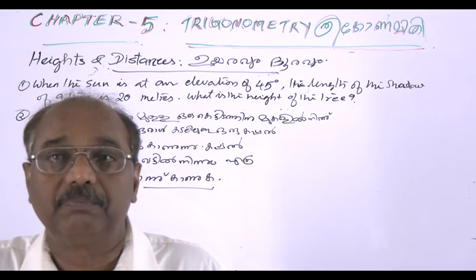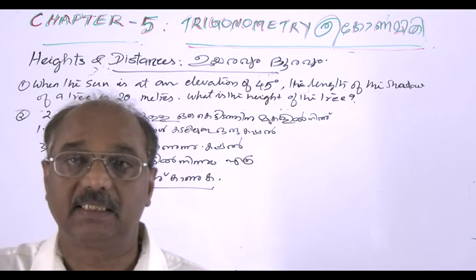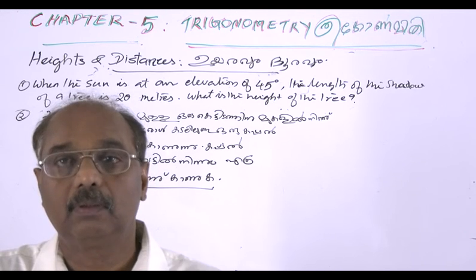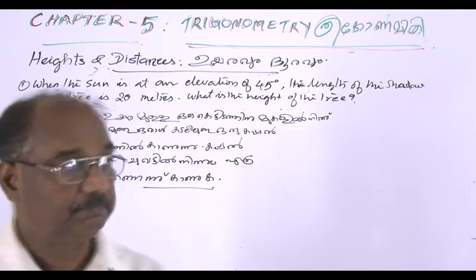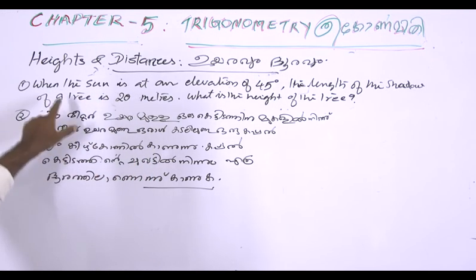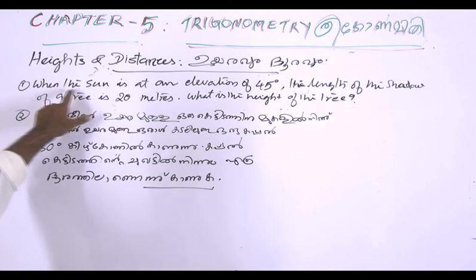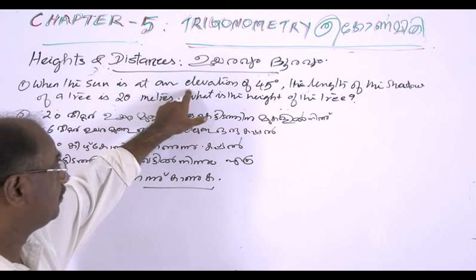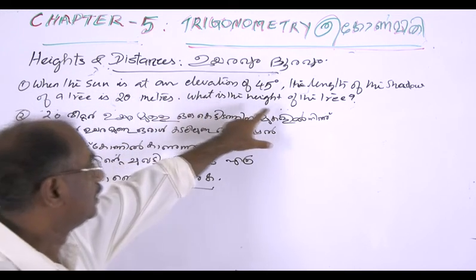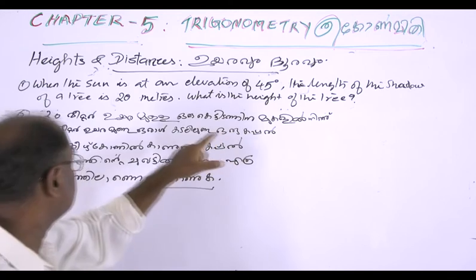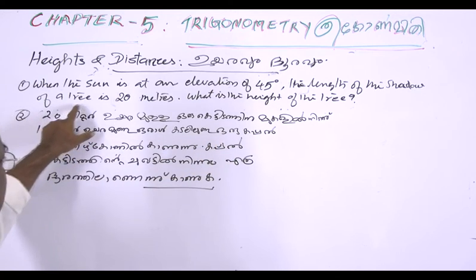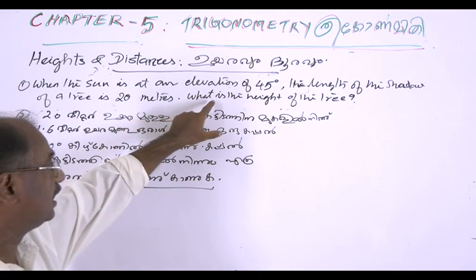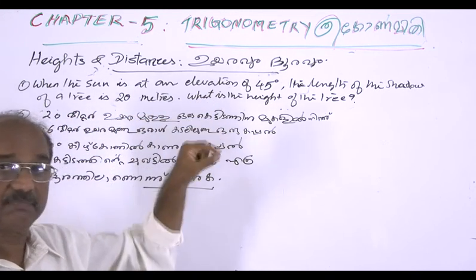Two questions from heights and distances. First one: when the sun is at an elevation of 45 degrees, the length of the shadow of a tree is 20 meters. What is the height of the tree?